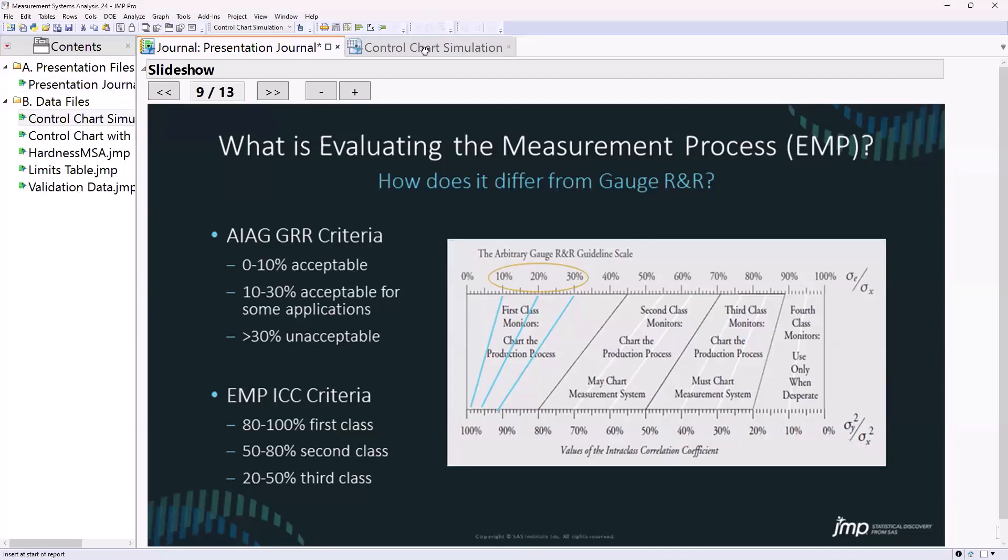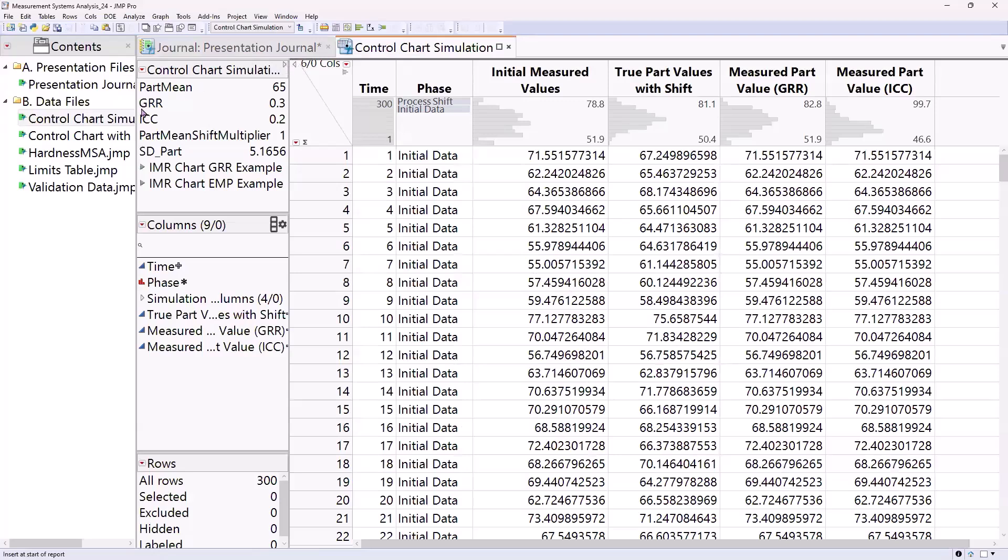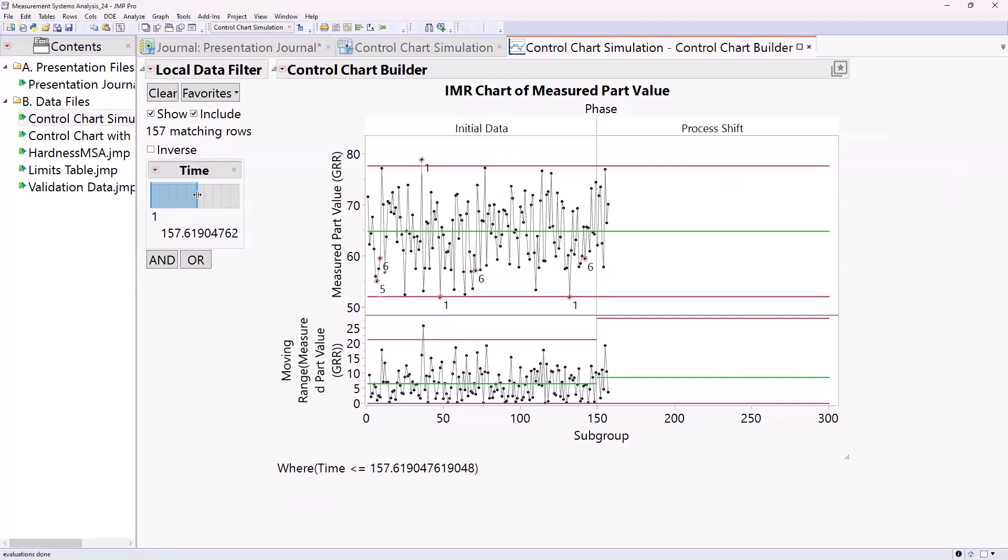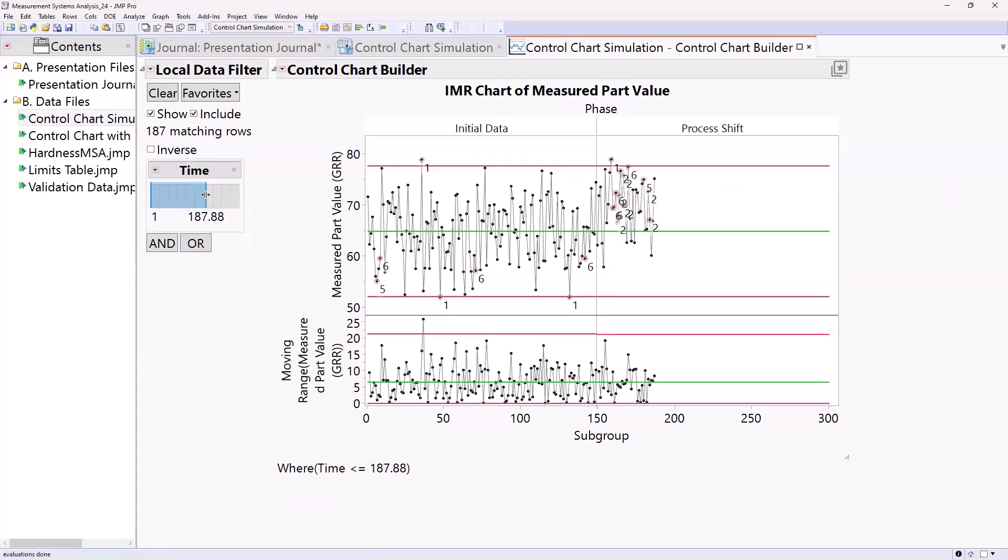In fact, I've got a little control chart simulation here. This is data simulated on a 30% R&R gauge, and if I go collect data and I actually truly have a one sigma shift in my process, that gauge with 30% R&R is still going to be able to detect a one sigma shift in the process.